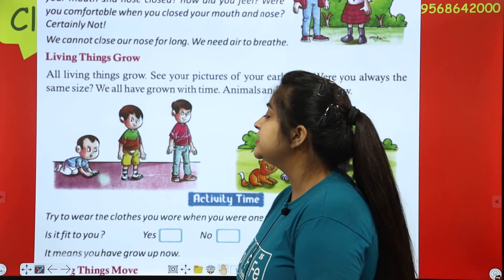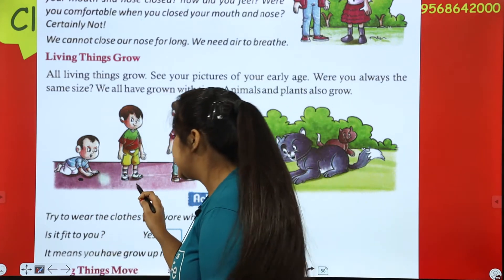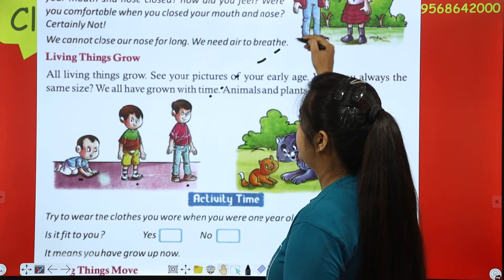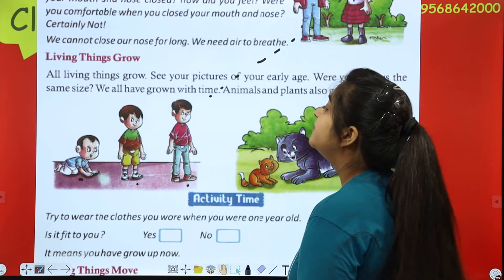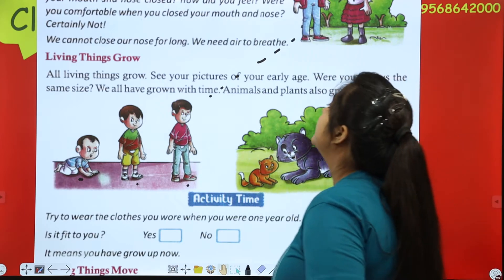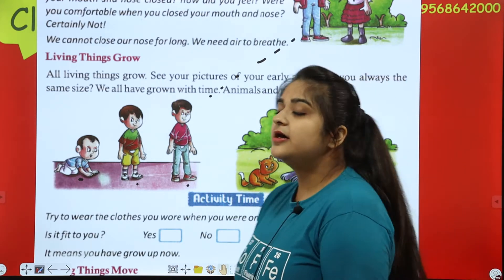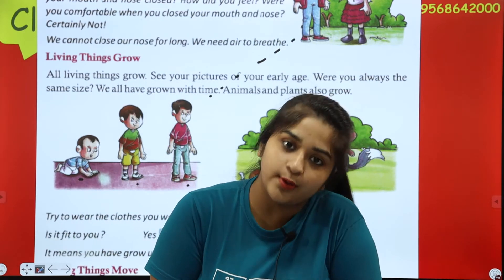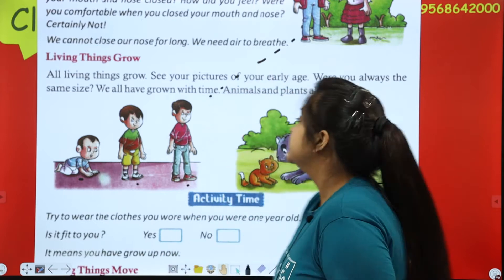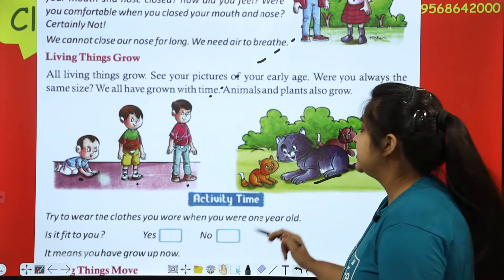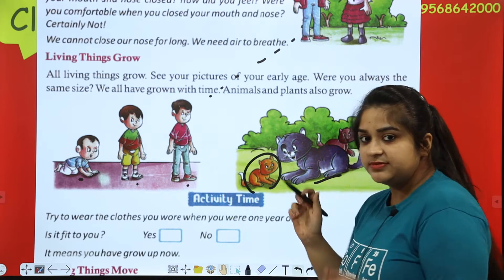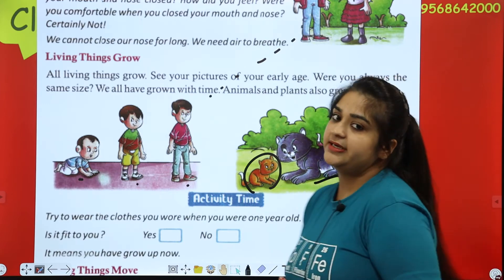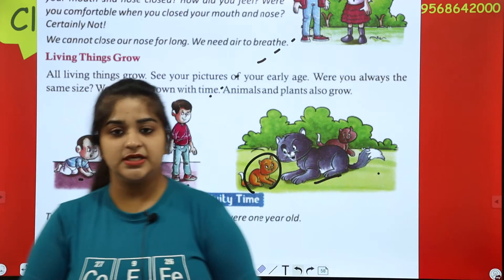We all have grown with time. Animals and plants also grow. For example, this is a cat — what was it first? A kitten, a small baby. Then it grew up and became a big cat.